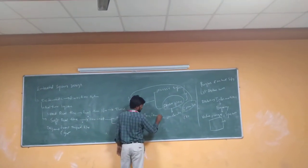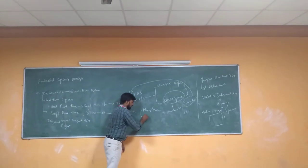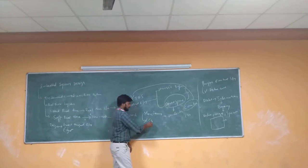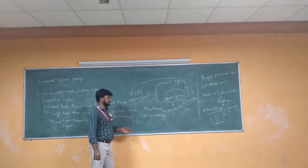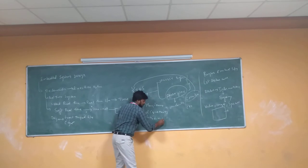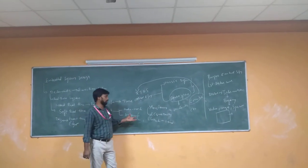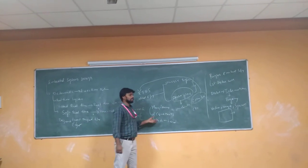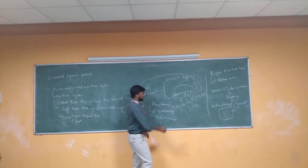The next purpose of the embedded system is monitoring information. A clear example is the electronic cardiograph, which monitors the heartbeat of a patient through electrodes. Here, the electrodes work as sensors attached to the patient. The device does not control the heartbeat but monitors how the heartbeat is functioning in a particular body.